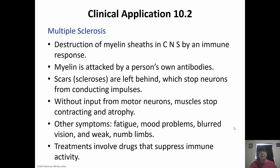Multiple sclerosis, or MS, occurs when the central nervous system myelin sheaths are actually destroyed by our own immune system. The myelin is attacked by antibodies that our immune system produces — it does not recognize it as self, so it attacks it as if it's a foreign body. Scars or scleroses are left behind, and that stops the neurons from conducting impulses. Once the impulse gets to that scar tissue, it can't go any further. Without input from the motor neurons, the muscles stop working and atrophy.